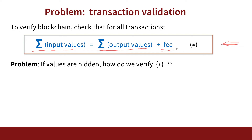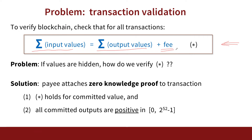But now that all the values are hidden, how do we know that this equation actually holds? Everything is hidden, so how do we verify it? This is a beautiful application of cryptography: we use a mechanism called a zero-knowledge proof. A zero-knowledge proof allows us to prove that the sum-of-inputs equals sum-of-outputs equation holds without revealing anything else about the equation. Anyone looking at the transaction can verify that the equality holds, but they learn nothing about the actual values. What we prove in zero-knowledge is, first, that the equality holds, and second, that all the numbers are positive.